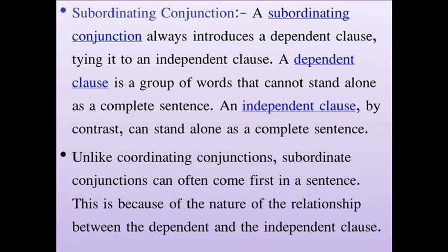Next we move to the second type: subordinating conjunction. A subordinating conjunction always introduces a dependent clause, tying it to an independent clause. A dependent clause is a group of words that cannot stand alone as a complete sentence — it depends on another clause to be complete. An independent clause, by contrast, can stand alone as a complete sentence.